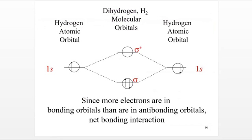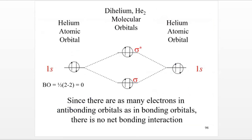For H2, both hydrogens have electrons in the 1s orbital. We place one electron from each into the sigma bonding orbital. Bond order = (2 − 0) / 2 = 1, so H2 is stable with a single bond. For He2, each helium has a filled 1s shell, so both sigma and sigma-star fill up completely. Bond order = (2 − 2) / 2 = 0, meaning it does not form — which makes sense since helium is a noble gas.